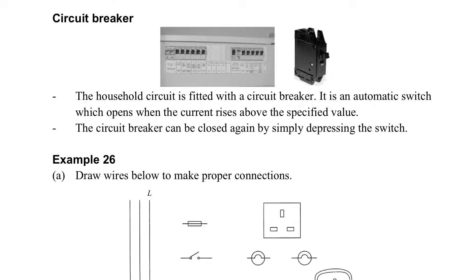The other thing is called the circuit breaker. Actually, the circuit breaker is just a kind of fuse, but it is designed so that we can switch it on and off. When the current is too high, then it will be off.